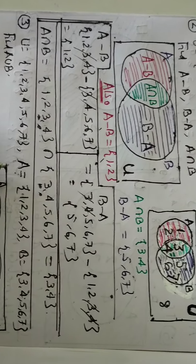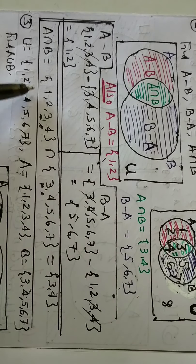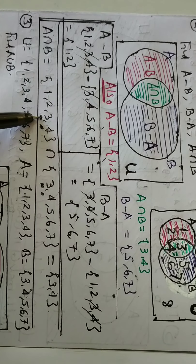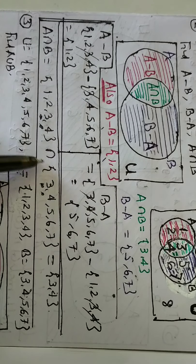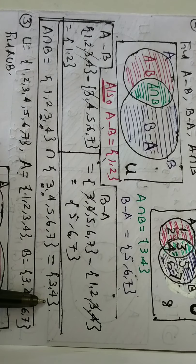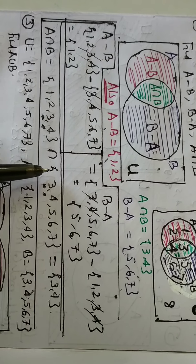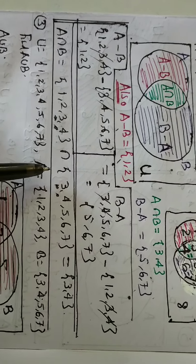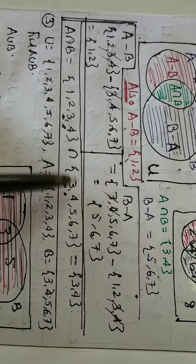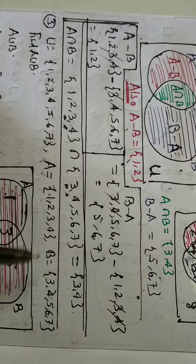So A intersection B: write the value of A, then intersection, then B. The common is {3, 4}. There are two methods: the Venn diagram method as well as the algebraic method. You can use any method.